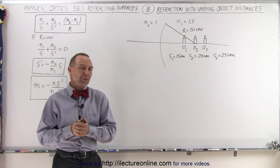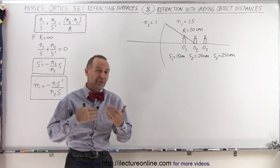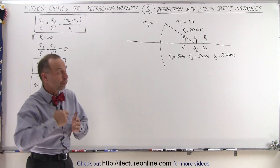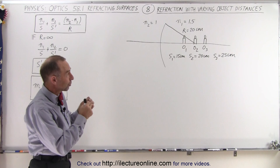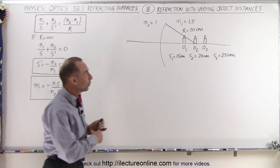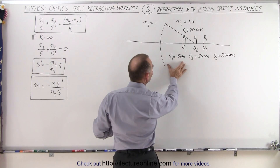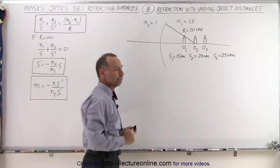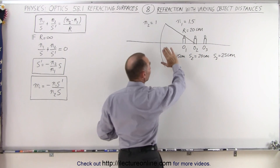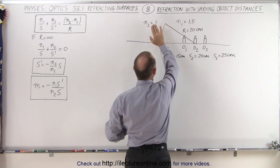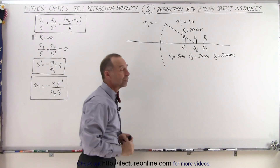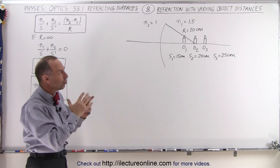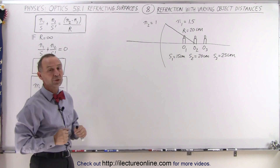Welcome to our lecture online. To get a better understanding of the concept of refraction across a curved surface, let's put three objects on the right side at 15, 20, and 25 centimeters away from the boundary. Notice that the index of refraction on the right side is 1.5 and on the left side is 1. The question is: where will the images be and how will they shift depending on where we put the object?